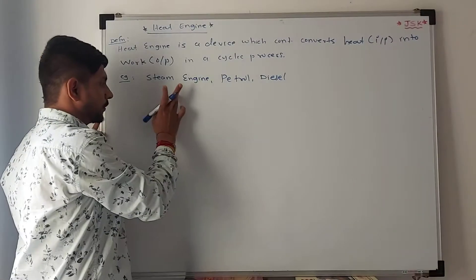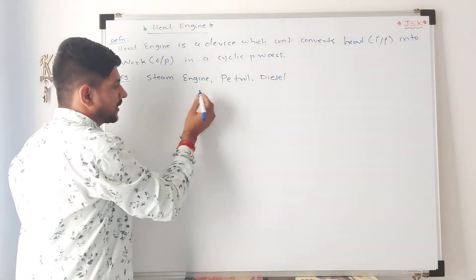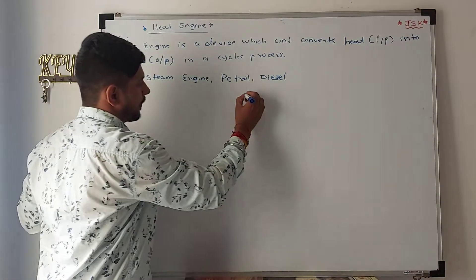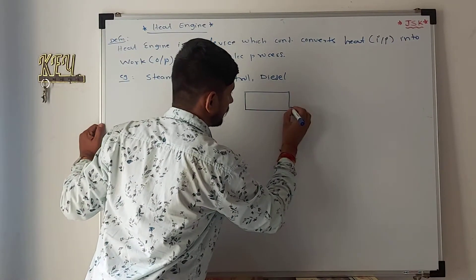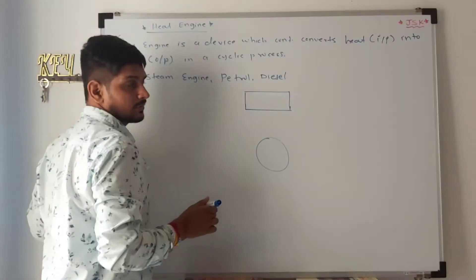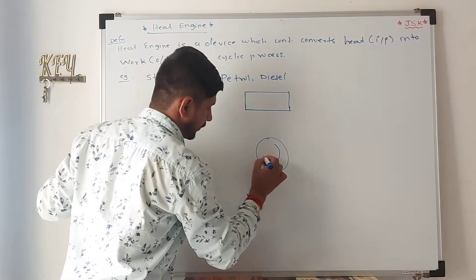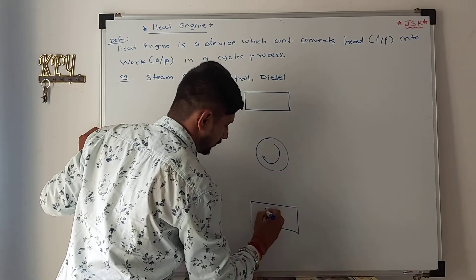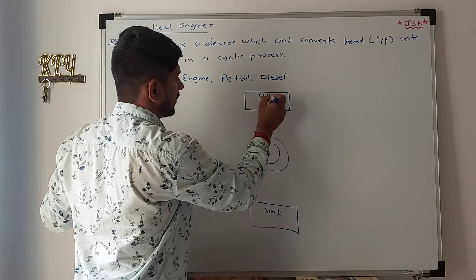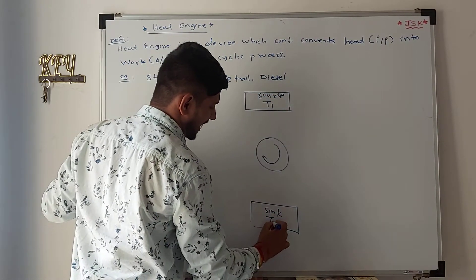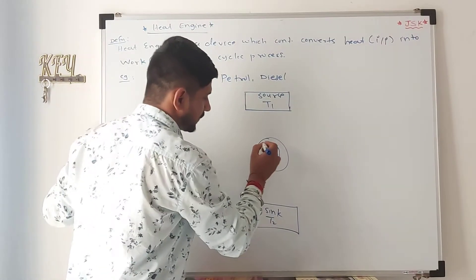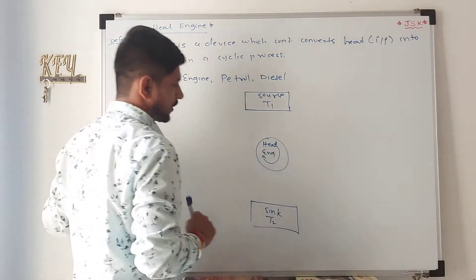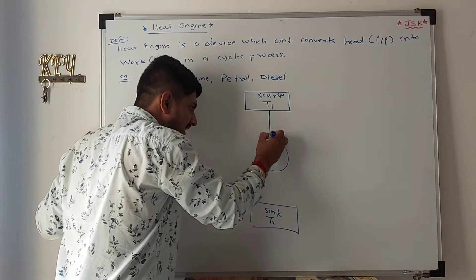So this is how it works: if we have a Carnot engine, suppose here there is a source at temperature T1, then there will be the engine where the process will be cyclic, and there will be a sink at temperature T2. This is nothing but the heat engine. So the heat engine will take heat from the source.